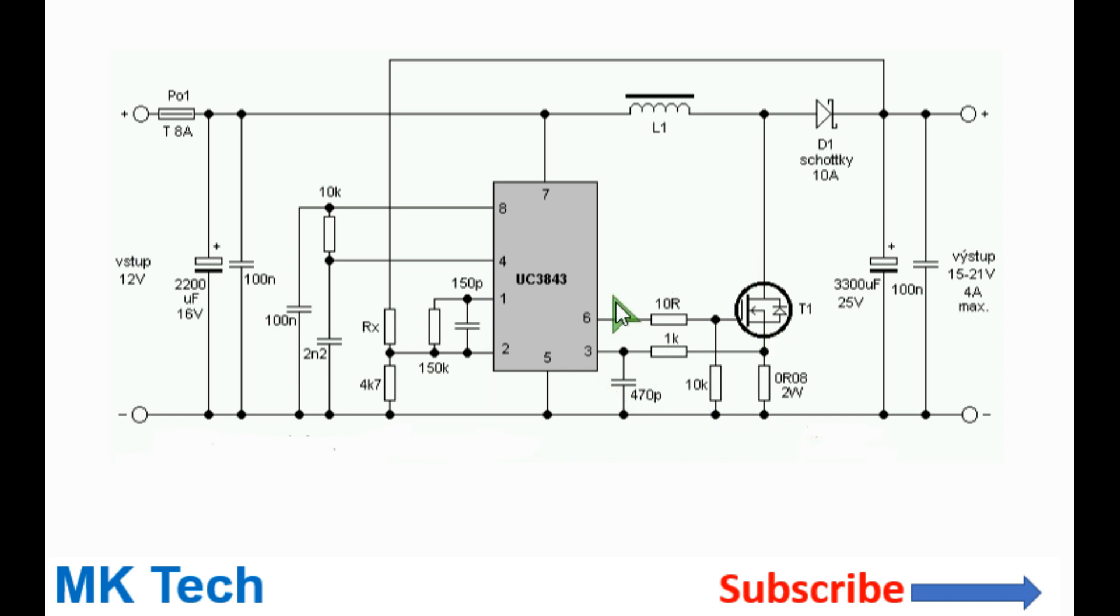When the output pin 6 is low, this MOSFET will be instantly turned off. Since current has no further path to flow, it will flow through this output Schottky diode into the output filtering capacitors as shown here or to the load.